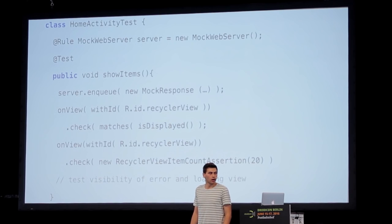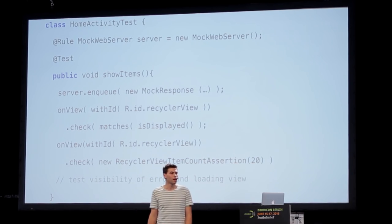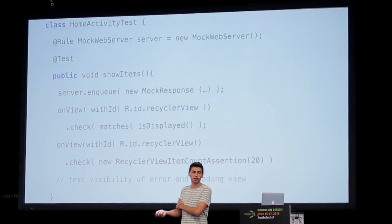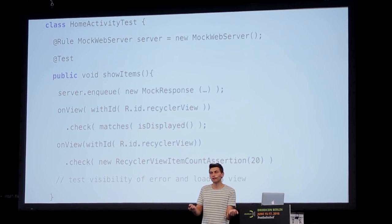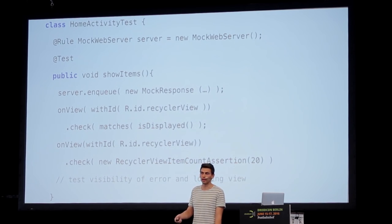Here's how this looks — we write an activity test for our HomeActivity using Espresso with the MockServer rule. We automatically use OkHttp MockServer instead of OkHttp, then say server.enqueue a new MockResponse with the data from our JSON file from the resources folder. Then we say onView with the ID verify that it is displayed, and we could also write custom matchers to count items in the RecyclerView — since we always get the same JSON feed, we always get the same items.